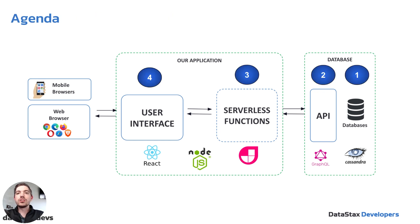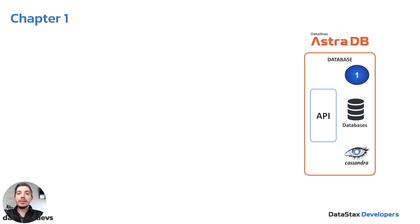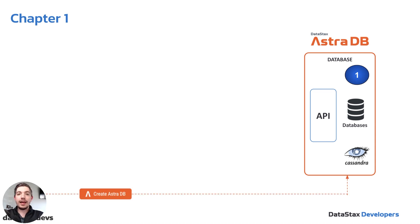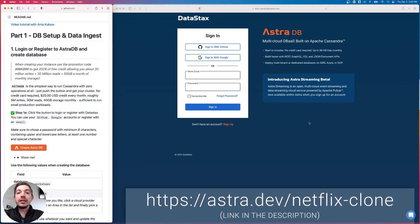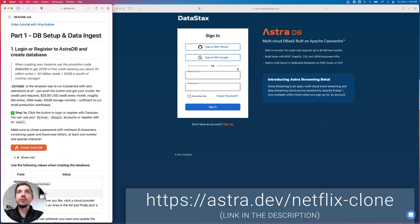Let's go ahead and start building this application. We're going to start at the database and work towards the front end. Our database is going to be a Cassandra database through AstroDB. AstroDB is completely free to get started — all you need is a GitHub account, a Google account, or you can sign up with a regular email and password. No credit card is needed to sign up at all.